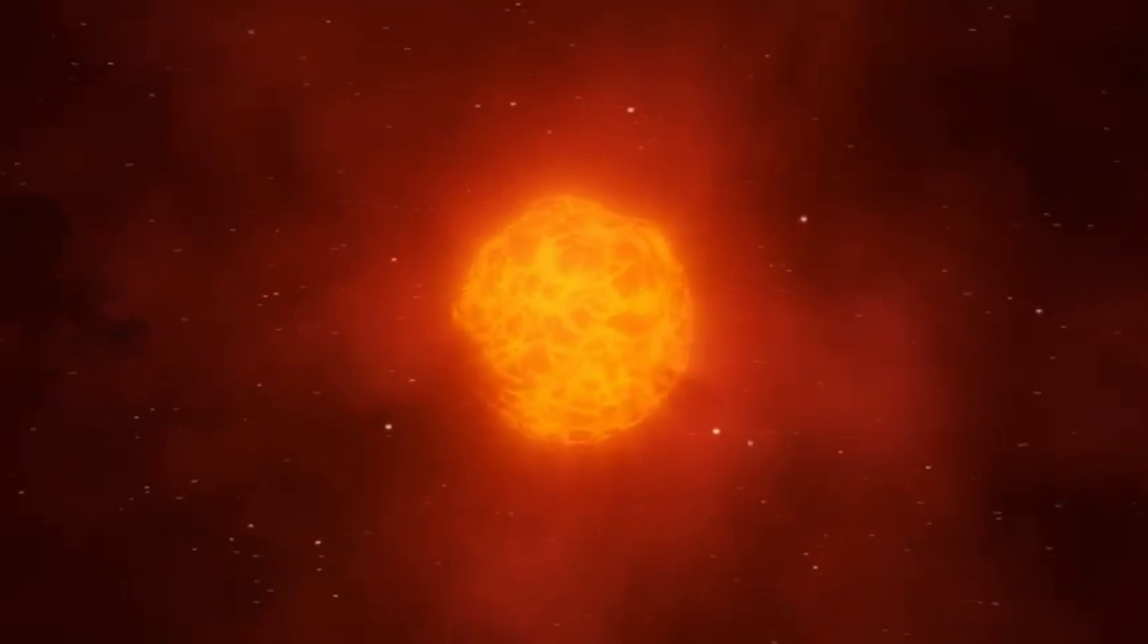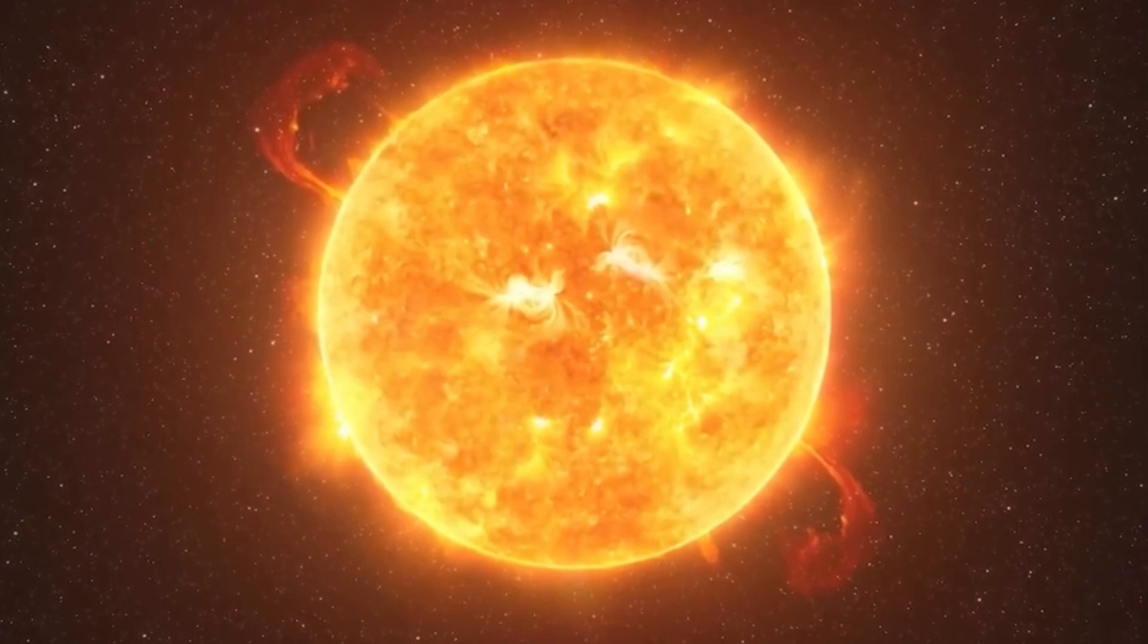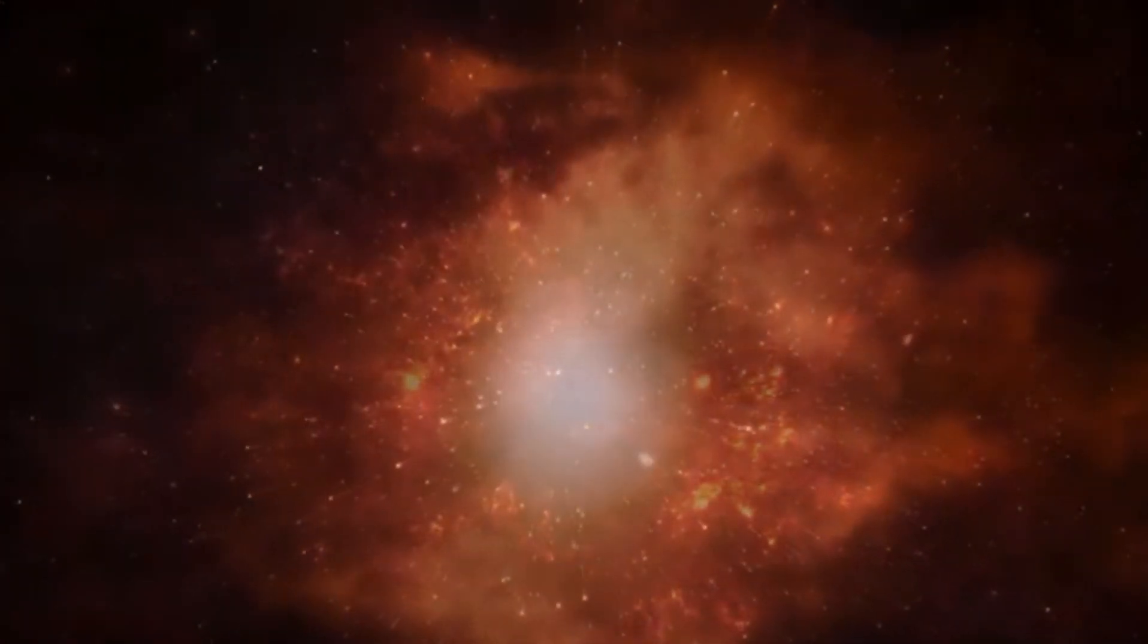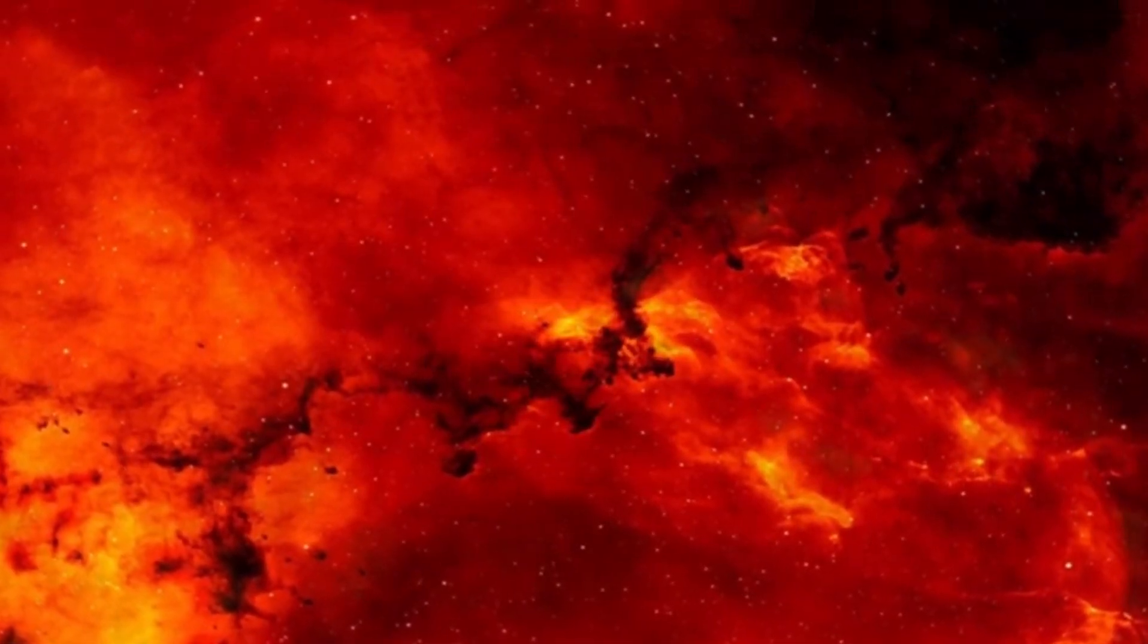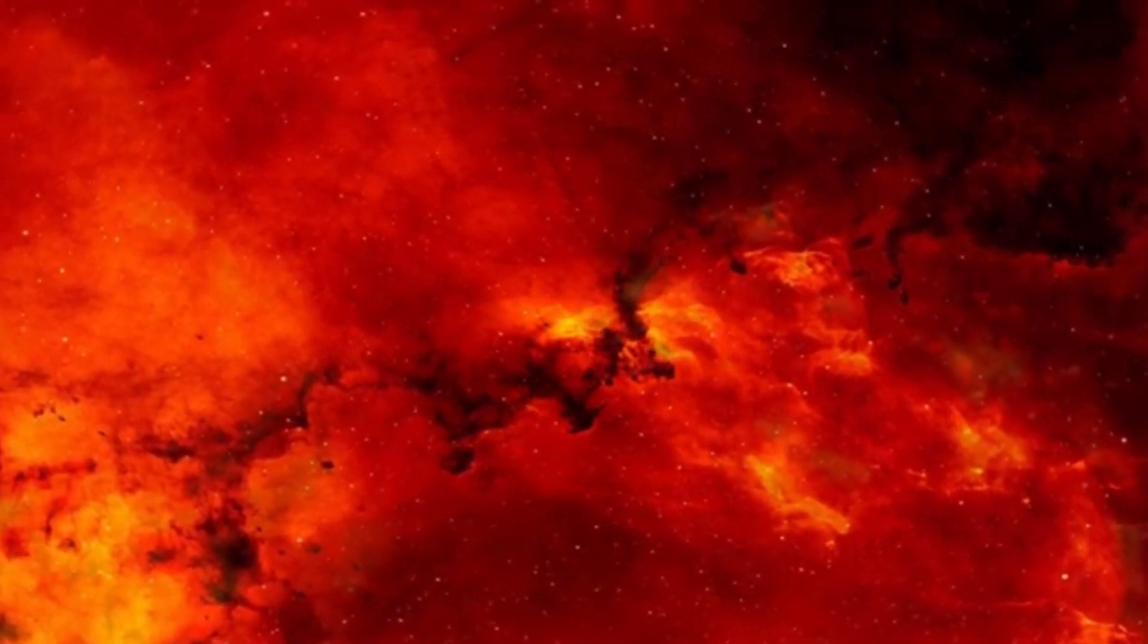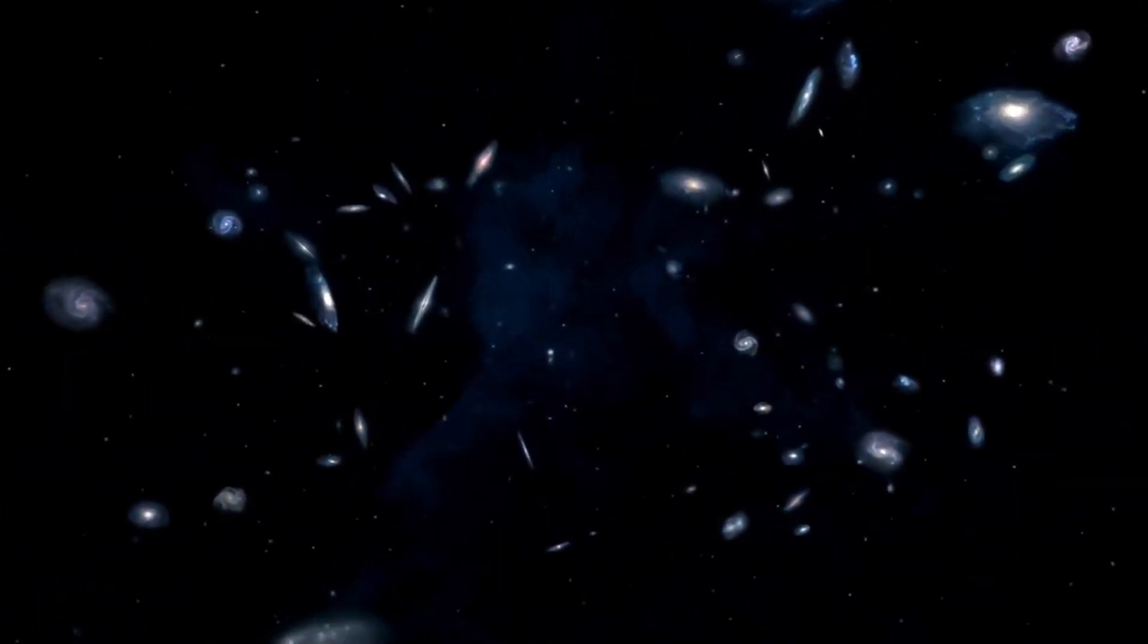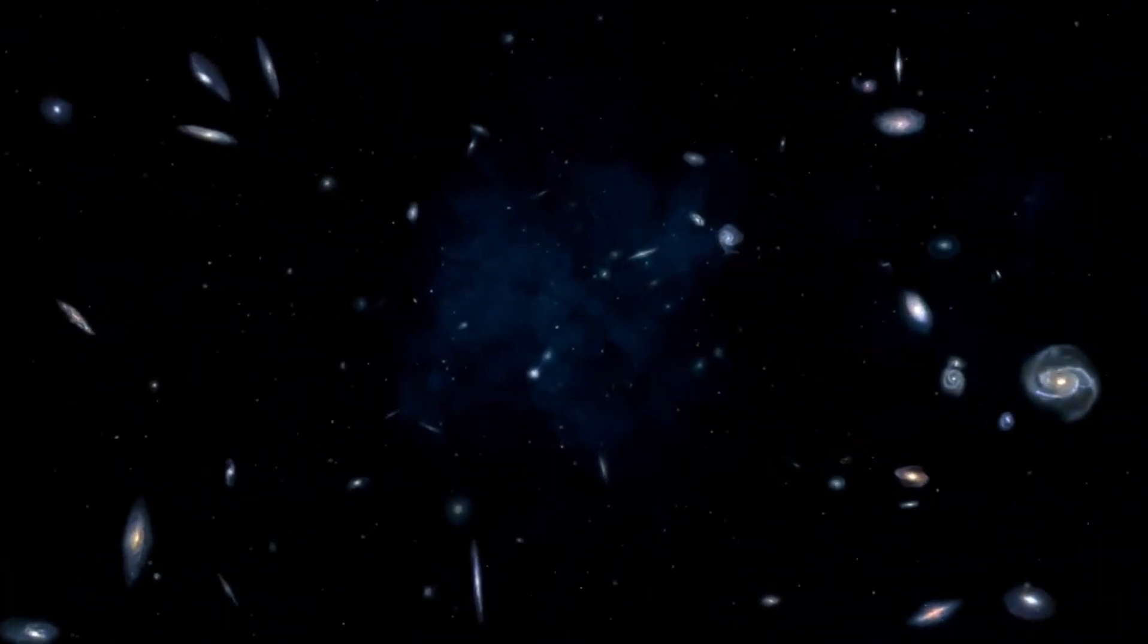During this period, the red supergiant star started experiencing significant dimming, a change noticeable even to the naked eye. Observations using the Very Large Telescope and the optical spectrum revealed that Betelgeuse appeared roughly symmetrical, but its photospheric layers exhibited signs of a substantial disturbance within our line of sight. The photosphere represents the outer layer of the star, where light is emitted.